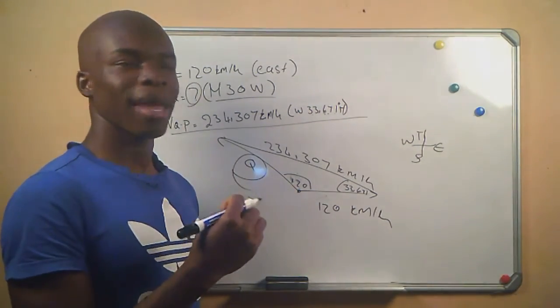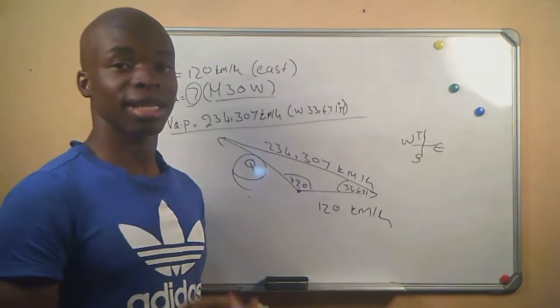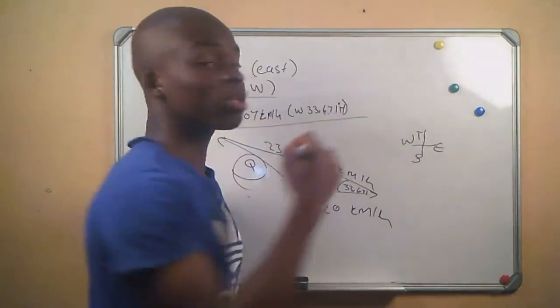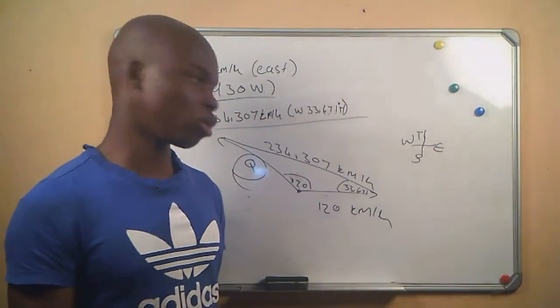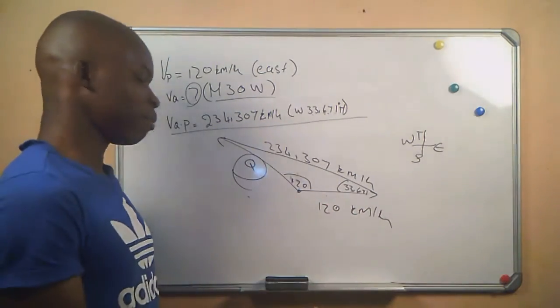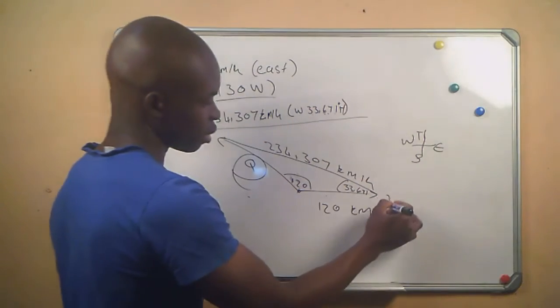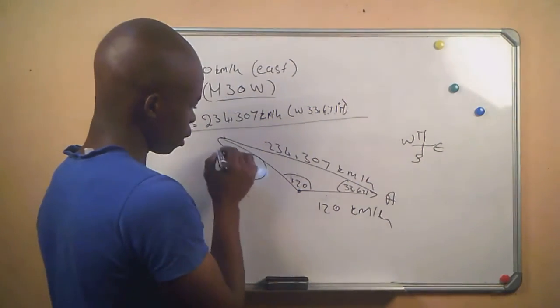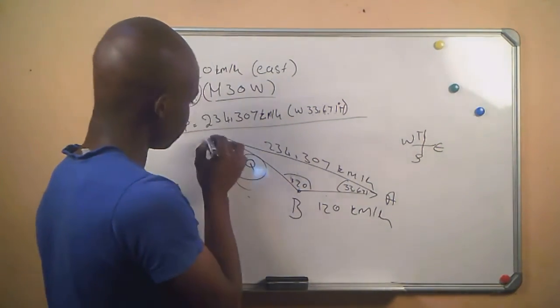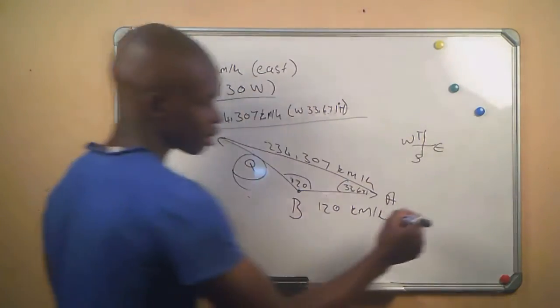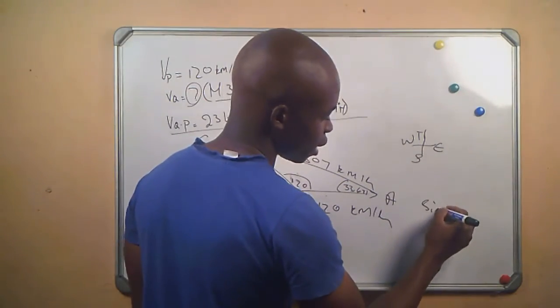And then we know that when we want information from a triangle that is not a right angle triangle, it's either we use a cosine rule or we use a sine rule. So in this question, the simplest rule that we can use is sine rule, which says let's say it's a, that's b, it's c.